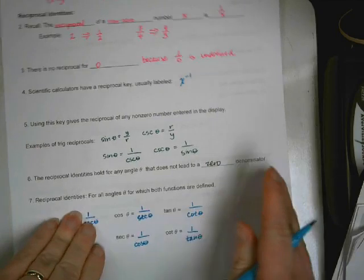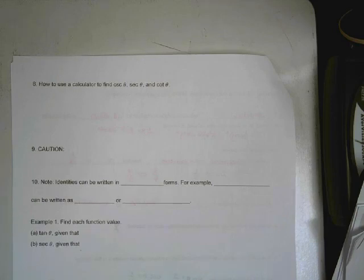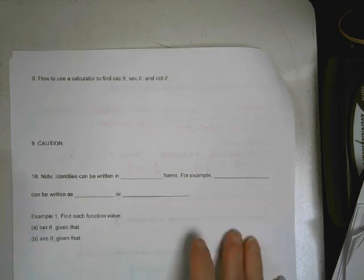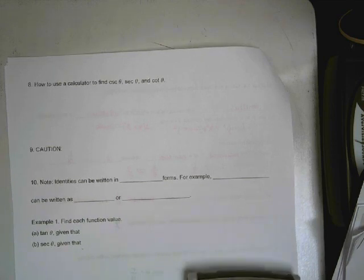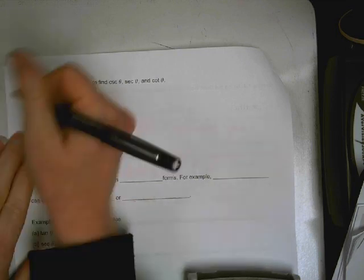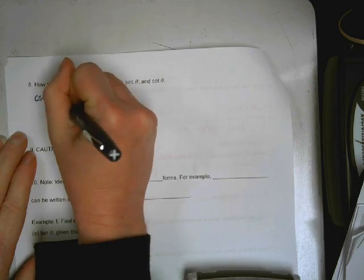Now, how do you use your calculator to find cosecant, secant, and cotangent? Some calculators have the cosecant, secant, and cotangent on them. My TI-inspire has them. But if your calculator doesn't have them, which the TI-84s do not, then you have to create them. If you're looking to find cosecant of theta using your calculator, you're going to plug in 1 over sine theta.